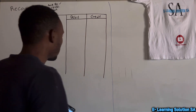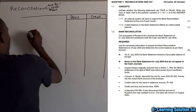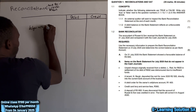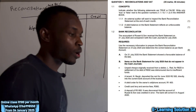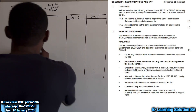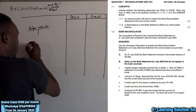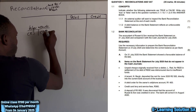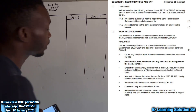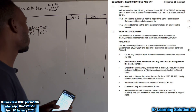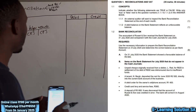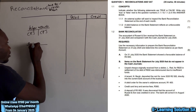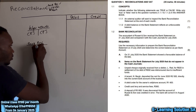The first statement we have is what we call a ledger account — that is our books. Under reconciliation, the ledger account is where we record cash receipts journal on the debit side and cash payment journal on the credit side. This is our own book.